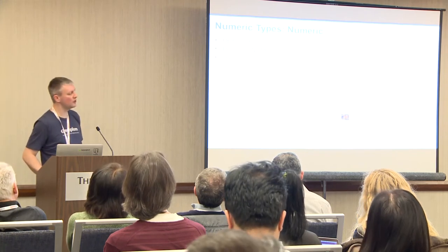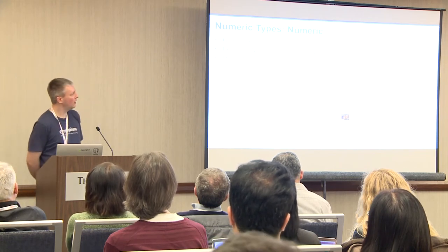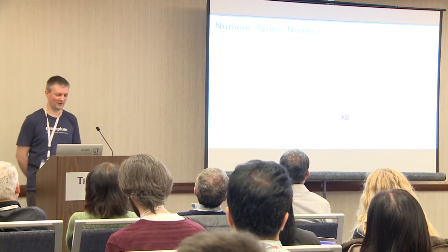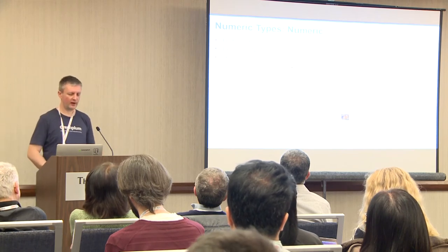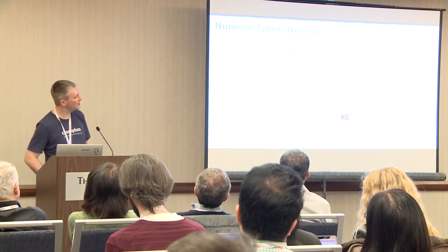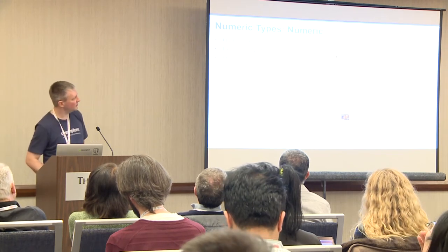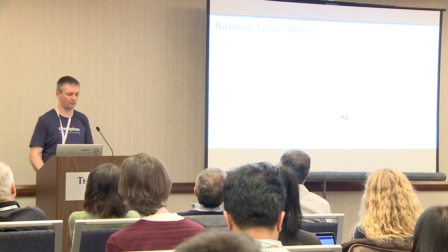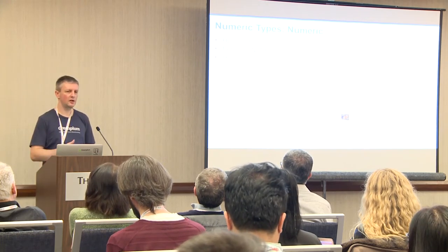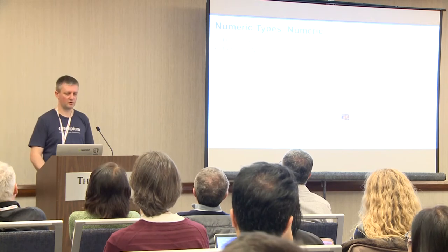If you want to store money, use numeric. Numeric has precision up to 1,000 digits — I haven't found a use case for more than 1,000 digits yet. You specify the total number of digits — like 10 — and the number of digits after your decimal point, like 3, so that's 7 before the decimal and 3 after. One downside: it's handled in software so there's no hardware support. Unlike an integer, which loads into a CPU register and processes very fast, numeric is handled in software, so it will be a bit slower.